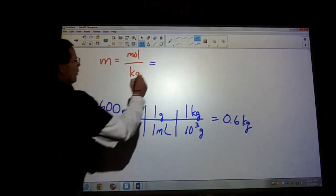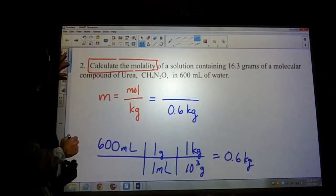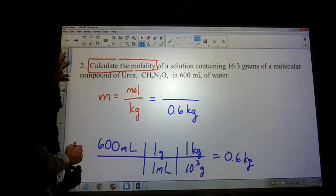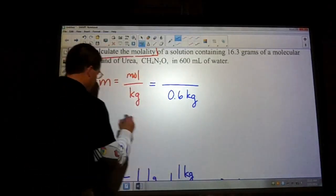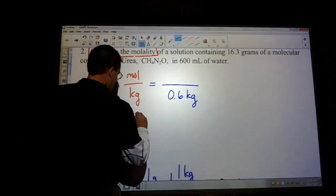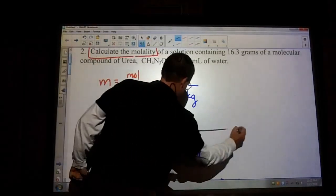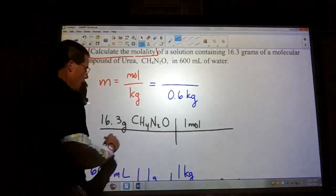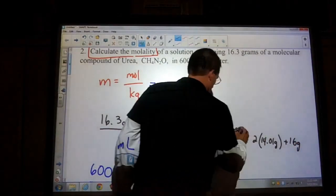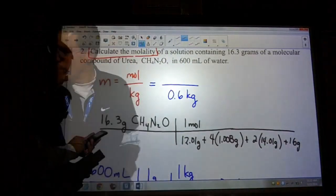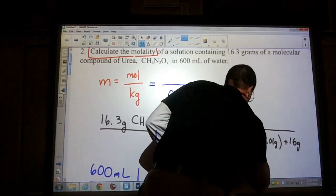We can place that down here on the bottom. And then we're looking for 16.3 grams of urea. So let's see here, 16.3 of our CH4N2O. So one mole of that, and we have one carbon. And all of that has a nice little molar mass, so that's 60.062 grams.